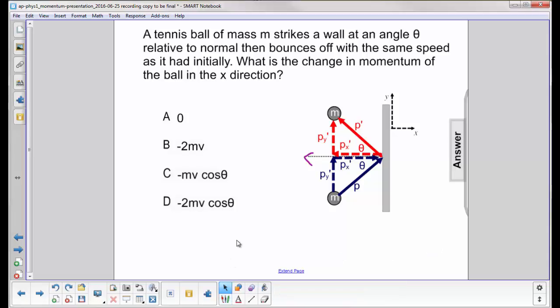So because of that, we're going to use the impulse momentum equation. We have the same speed as it had initially, and we want to find the change in momentum of the ball in the x direction. So we have f delta t equals p prime x final minus p x.